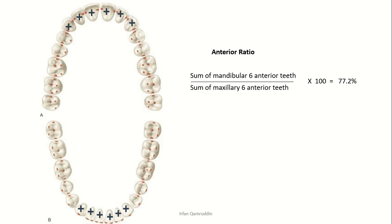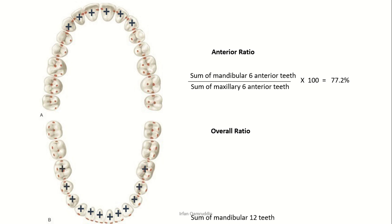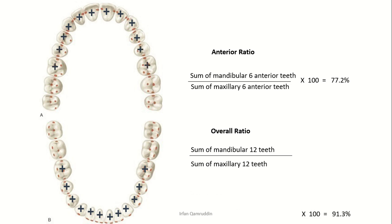The normal value for the anterior Bolton ratio is 77.2%, which shows that mandibular anterior teeth are much smaller than maxillary six anterior teeth. For the total or overall ratio, add three more teeth in each quadrant — from the first molar of one quadrant to the first molar of the other — sum the mesiodistal width of 12 mandibular teeth and divide by the sum of 12 maxillary teeth, then multiply by 100. The normal value is 91.3.